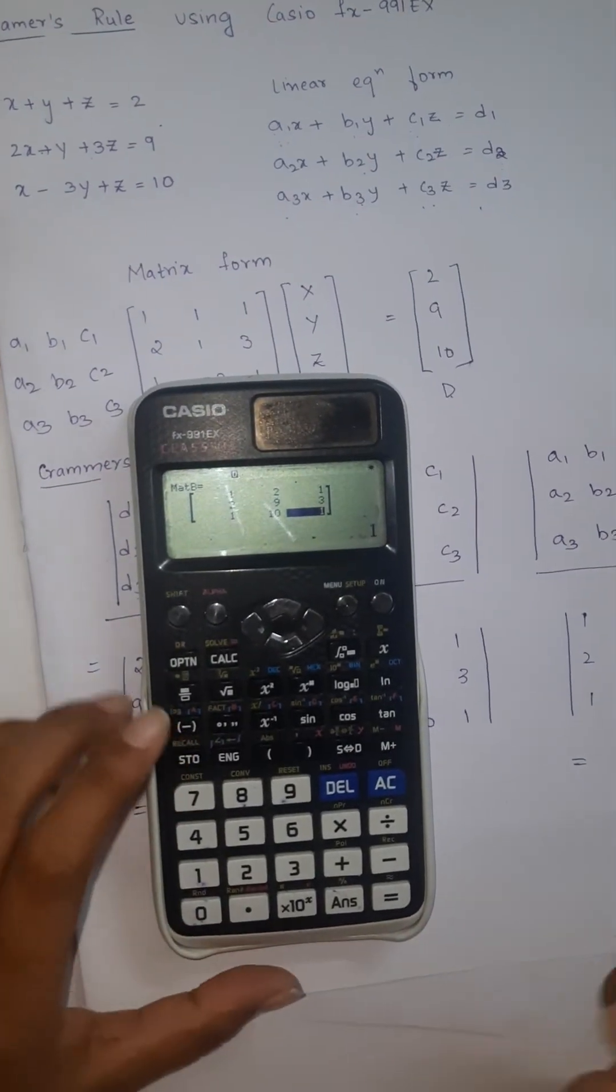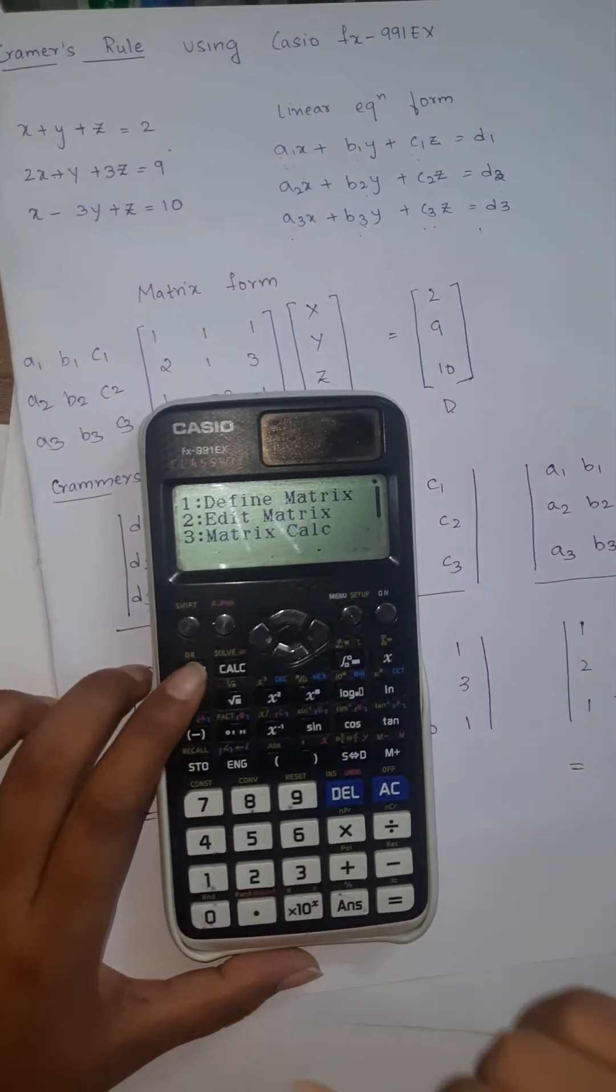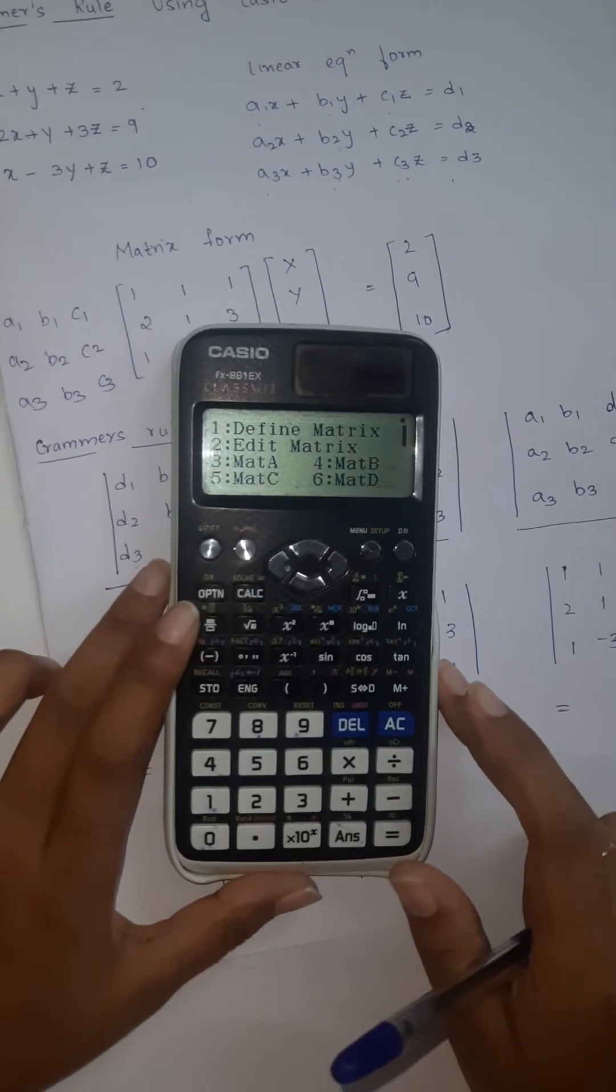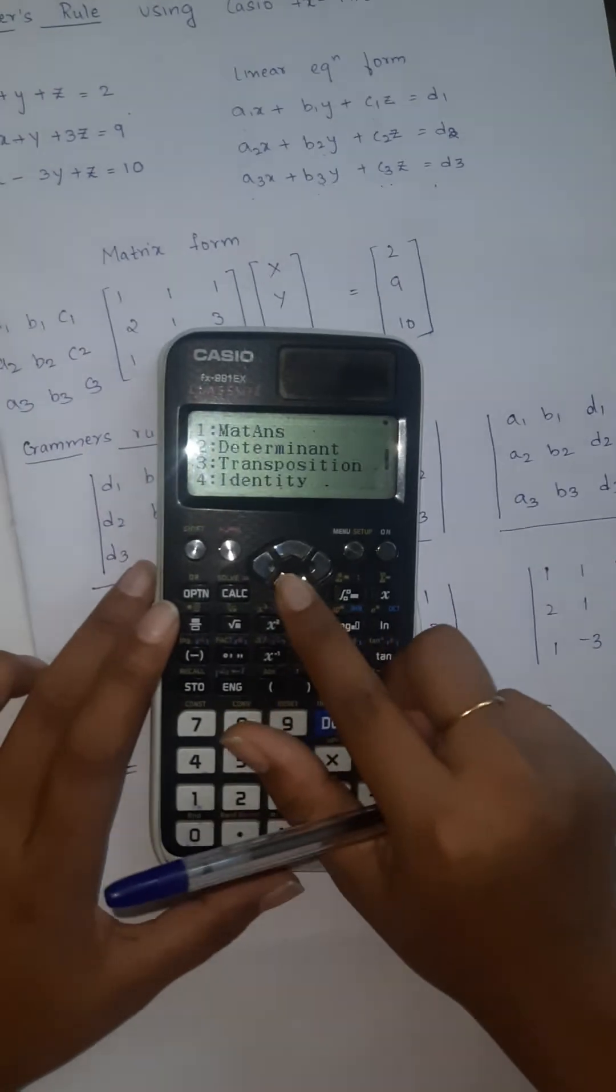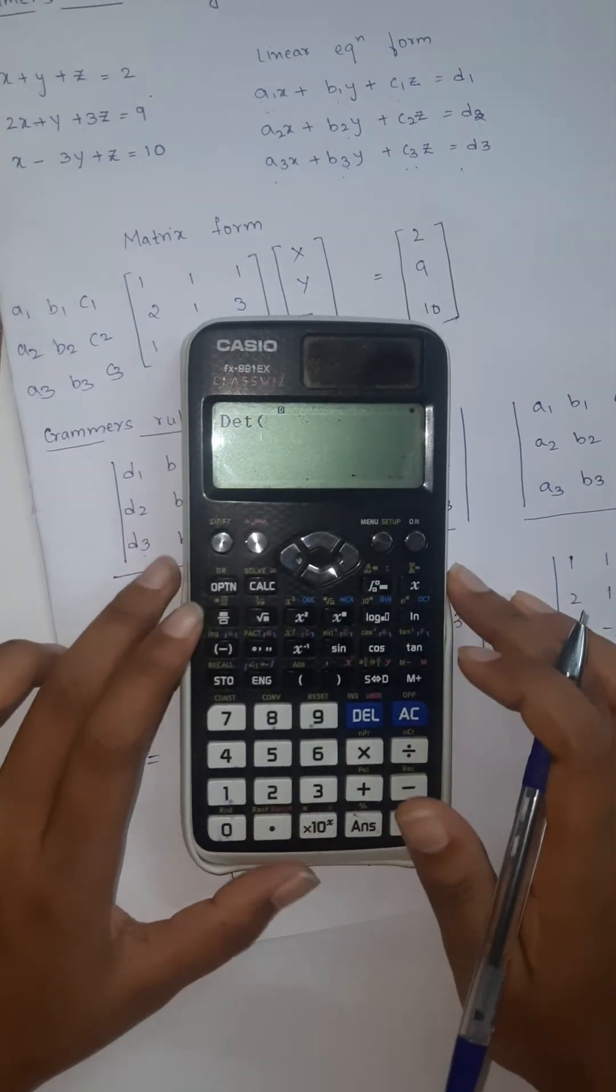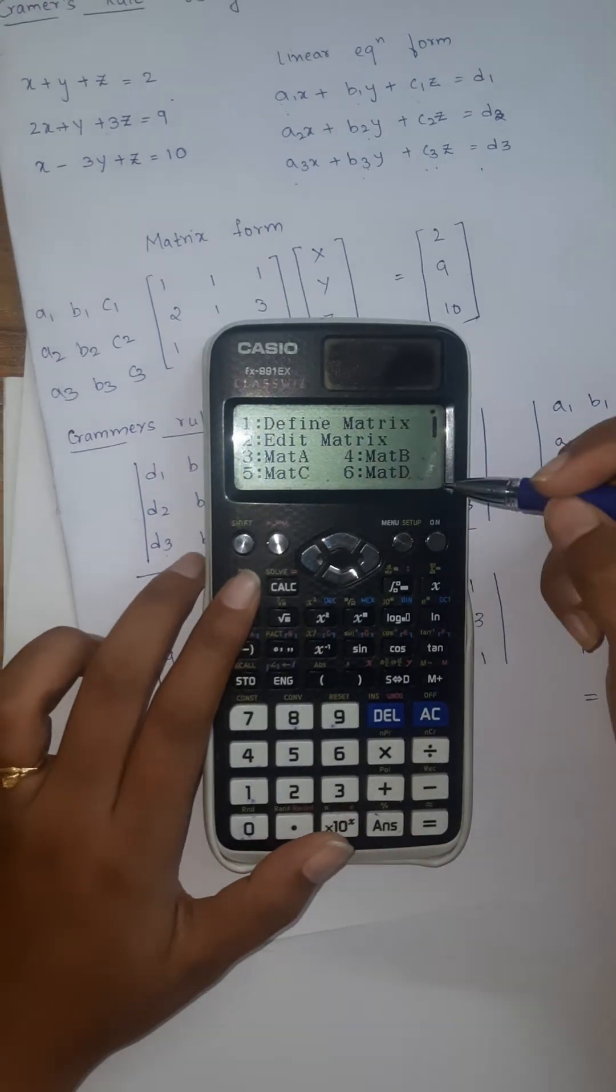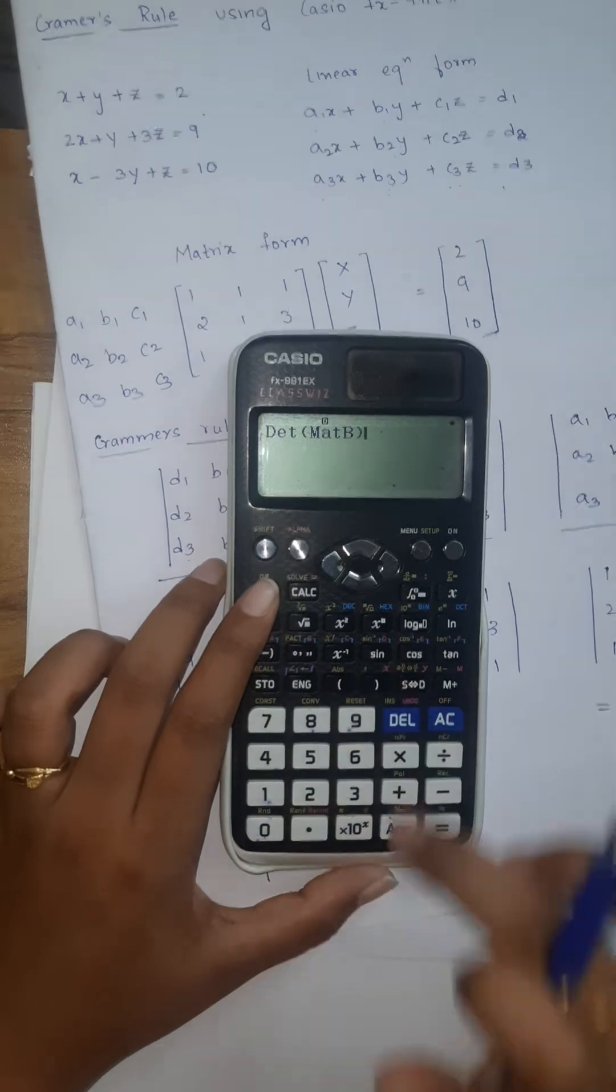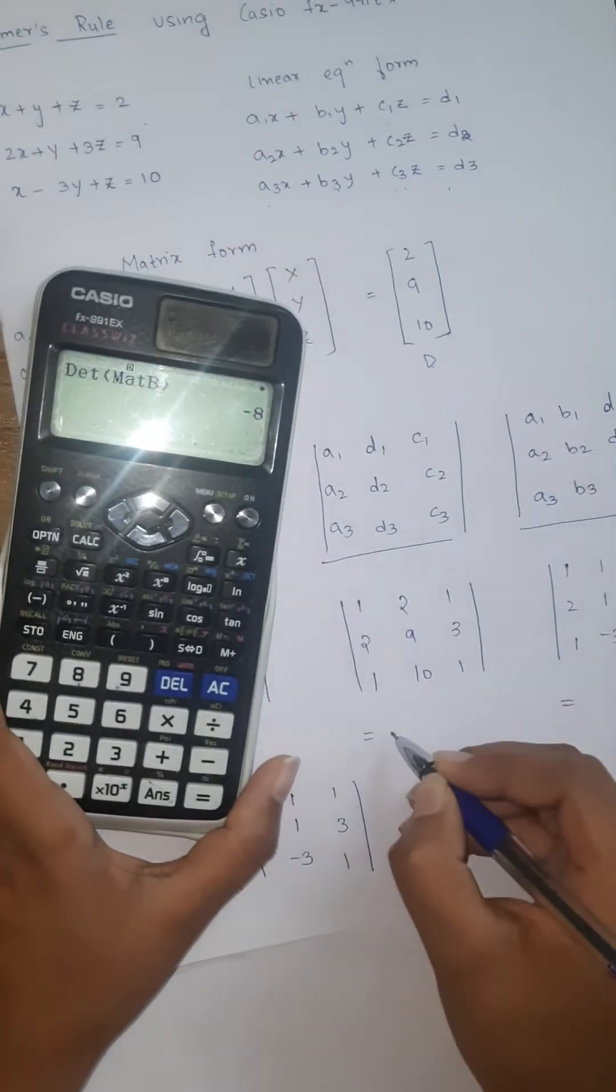Go to option, we need matrix calculation. Click on 3. Go to option, what do we want? Determinant. Click on 2. Go to option. Which matrix we defined? That was matrix B. Go to 4, close the bracket equals. We got it as minus 8.